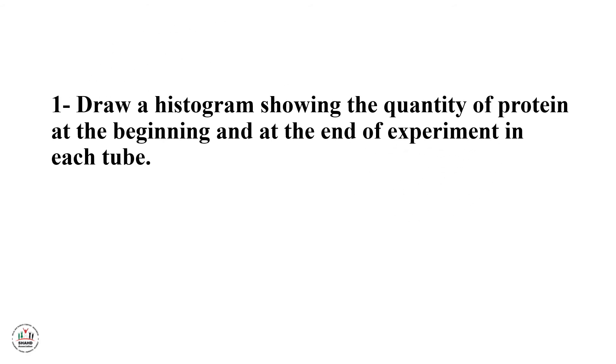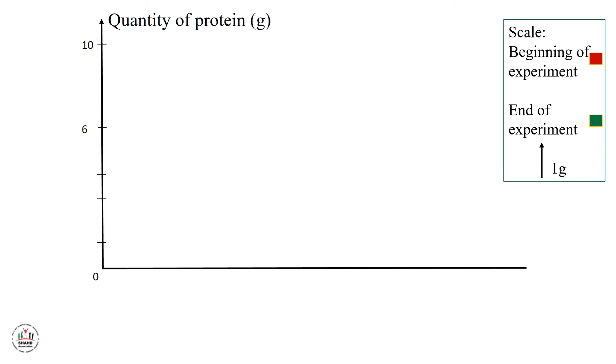First question: draw a histogram showing the quantity of protein at the beginning and at the end of experiment in each tube. فإذاً نمس هل احنا نتعلم كيف نرسم الhistogram. أول خطوة بنرسم x axis وال y axis وعلى x axis ما بنحط السهم. ثاني شي بنختار: بال beginning of experiment بنرسمه باللون الأحمر وال end of experiment بنرسمه باللون الأخضر. ثاني شي حنختار ال scale على ال y axis - كل 1 cm هو عبارة عن 1 gram. أنا اخترت 1 gram لأنه احنا عندنا الأرقام بين الصفر والعشرة.